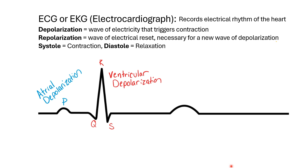The last wave is the T wave. Notice it's just alphabetical — PQRST — and that T wave is ventricular repolarization, the wave of electrical reset.